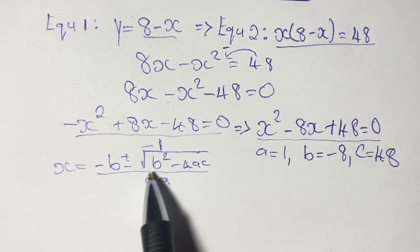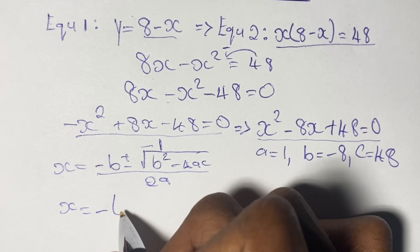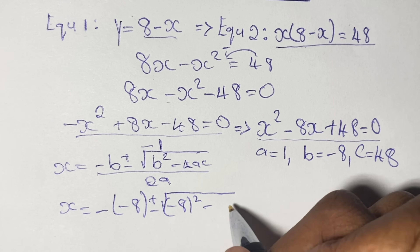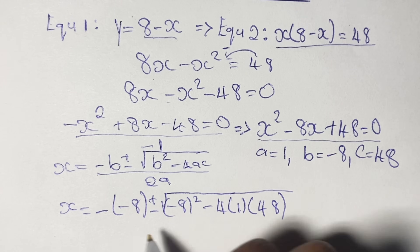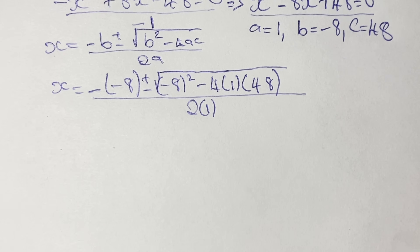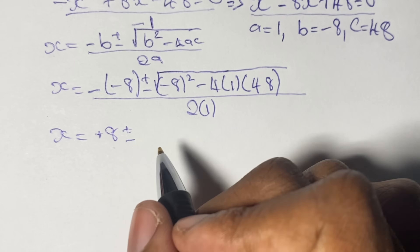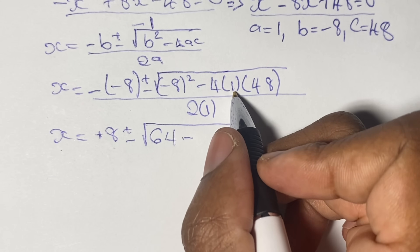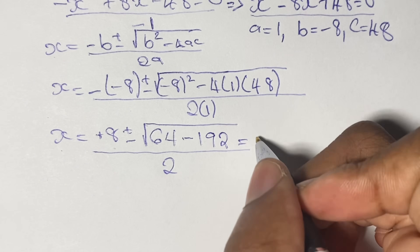Plugging in the values, x equals negative(negative 8) plus or minus the square root of (negative 8) squared minus 4 times 1 times 48, all over 2 times 1. Simplifying: the double negative gives positive 8, negative 8 squared gives positive 64, and 4 times 1 times 48 gives 192. So we have 8 plus or minus the square root of (64 minus 192), all divided by 2.